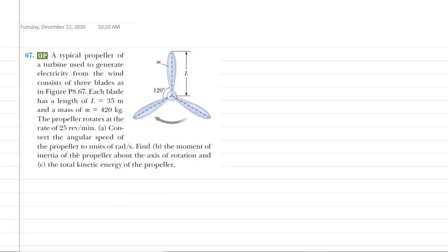In part A of the question, we must convert the angular speed of the propeller into the units of radians per second. If we look at the given information, we can see that the angular speed is given in units of revolutions per minute, so it becomes our task to change that into radians per second. Let's go ahead and write down 25 revolutions per minute — it's a good idea to write it as 25 revolutions over 1 minute.